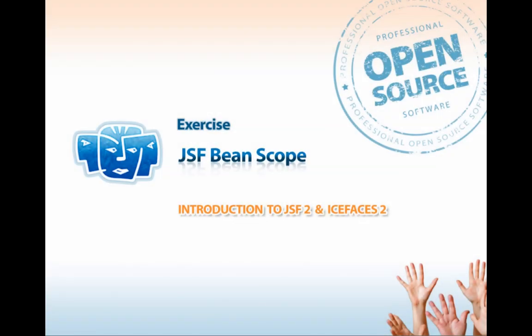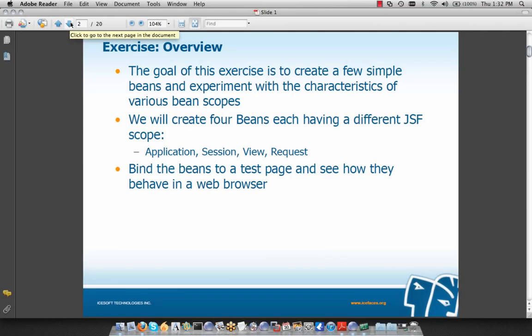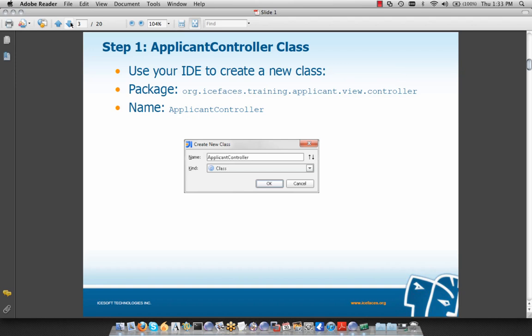Our next exercise is on JSF bean scopes. The prerequisites are that we've successfully completed our first project and have at least two different web browsers installed. The goal is to create a few simple beans and experiment with the characteristics of various bean scopes — we're going to create four beans, each having a different scope: application, session, view, and request. We'll bind these beans to a test page and see how they behave in a web browser, using expression language to bind our view to the model. Our first step is to create an application scope bean.